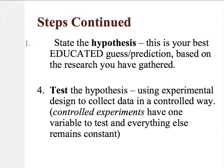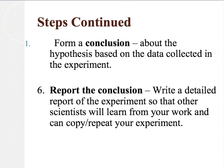Step three: state your hypothesis. This is your best educated guess or prediction based on the research you've gathered, so you have to do the research first to make an educated guess instead of just going with what you think. Step four: test the hypothesis using an experimental design to collect data in a controlled way. Controlled experiments have only one variable and everything else remains the same, otherwise you won't know what caused the change.